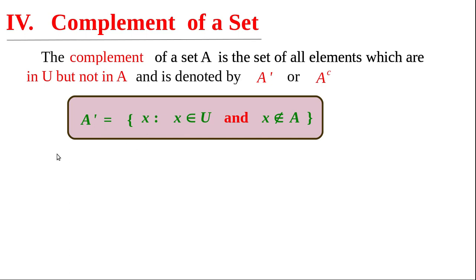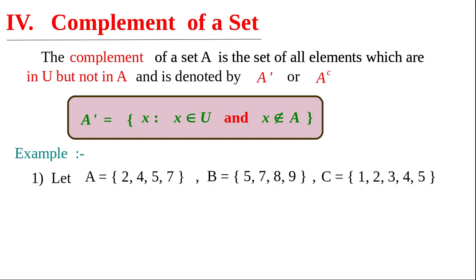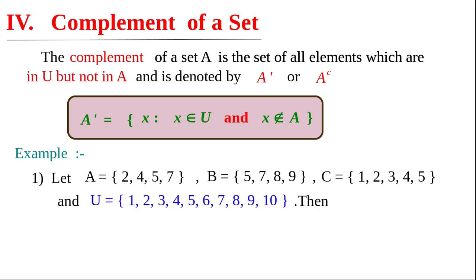Now let us write some examples for complement of a set. Let A = {2, 4, 5, 7}, B = {5, 7, 8, 9}, C = {1, 2, 3, 4, 5}, and universal set U = {1, 2, ..., 10}. Then A dash equals {1, 3, 6, 8, 9, 10} — the set of all elements in U but not in A. When we take the union of A and A dash, we get U: {1, 2, 3, 4, 5, 6, 7, 8, 9, 10}. So A union A dash equals U, which means A dash equals U minus A.